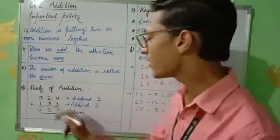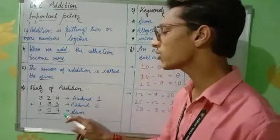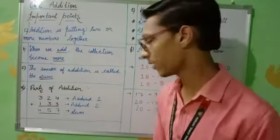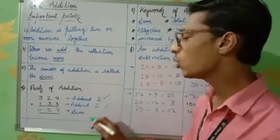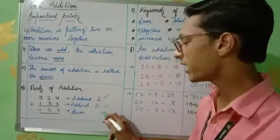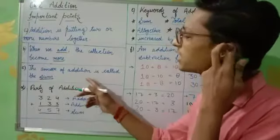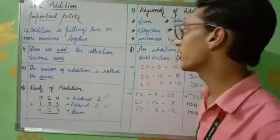We are having an addition: 324 plus 133. When we add, the answer is 457. So 324 is addend 1, 133 is addend 2, and 457 is the sum because it is the answer of addition.